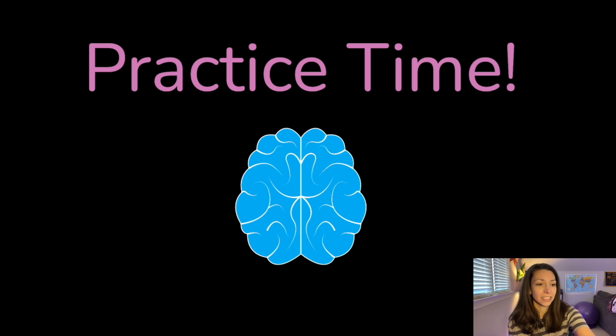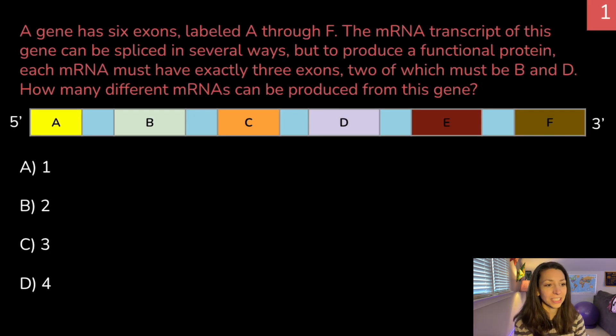All right, it's practice time. Let's do a few practice questions to really lock this knowledge into our brain. So a gene has six exons labeled A through F. The mRNA transcript of this gene can be spliced in several ways, but to produce a functional protein, each mRNA must have exactly three exons, two of which must be B and D. How many different mRNAs can be produced from this gene? So I recommend trying this with some scratch paper and drawing it out. You can hit pause, and when you're ready, go ahead and we'll go over the answer.